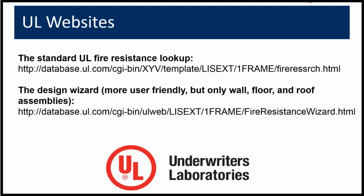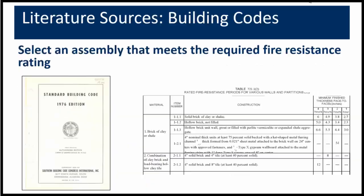Here's some information about the UL websites — we will also be posting these on the WJE portal for the fire protection TRG shortly. Another good literature source to select an assembly that meets the required fire resistance rating are building codes. The 1976 edition of the standard building code has an extensive appendix with listings of all types of assemblies, which is very useful, though that helpful appendix was deleted in the editions following 1976. The current 2015 edition of the IBC, Chapter 7, includes a list of assemblies and ratings which may be able to be matched to the assembly in question.